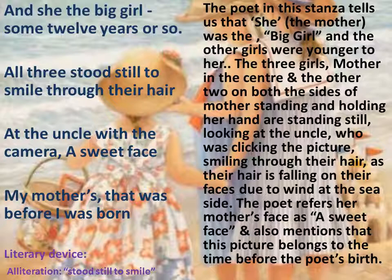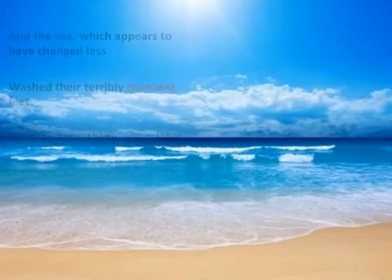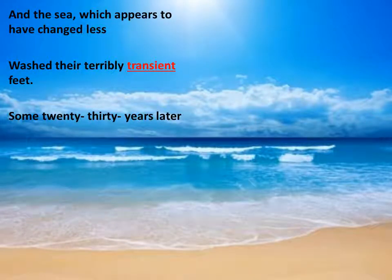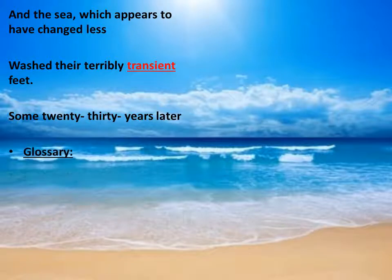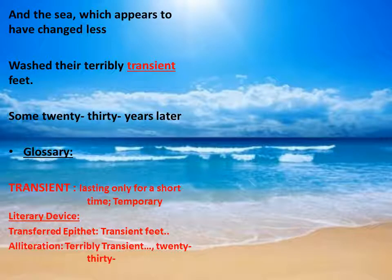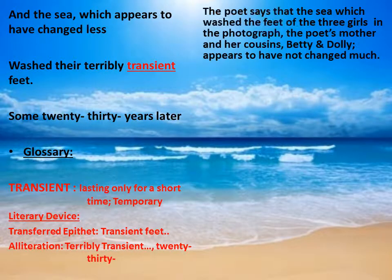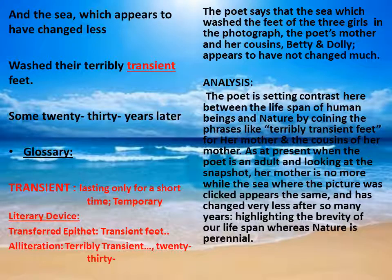The next stanza says: 'And the sea, which appears to have changed less, washed their terribly transient feet some 20-30 years later.' In the glossary, 'transient' means lasting only for a short time — something which is temporary. The literary devices used are transferred epithet in 'transient feet,' and alliteration with the repetition of 't' in 'terribly transient.' The poet says the sea that washed the feet of the three girls in the photograph has changed less, while the poet's mother and her cousins Betty and Dolly are no more.